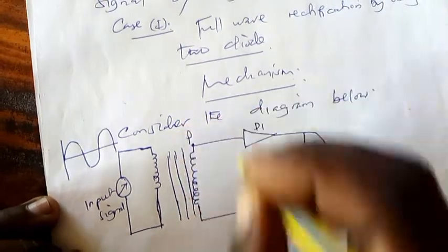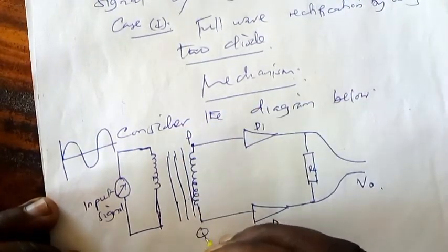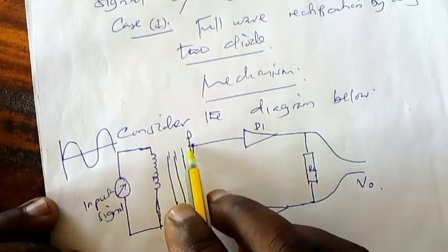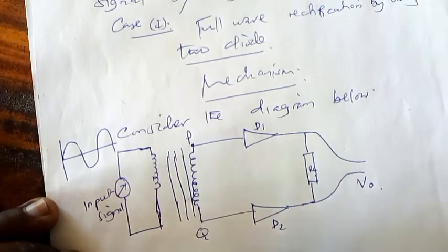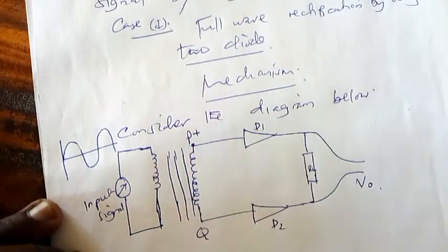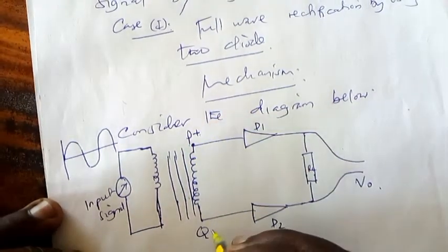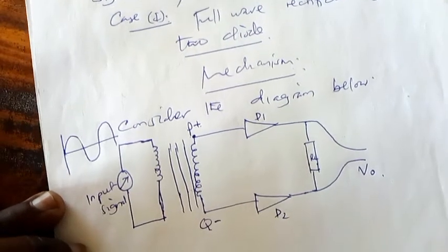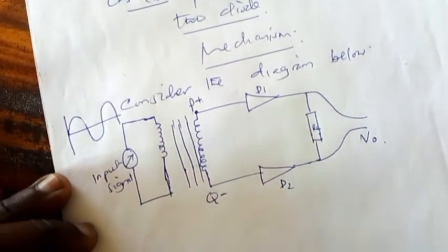Assume that this point to be P and this point to be Q. Assume this terminal is P, this one is Q. Now at P, we will take it, for example, as being positive. When it's positive, this one here becomes negative. Let's look at the mechanism now.